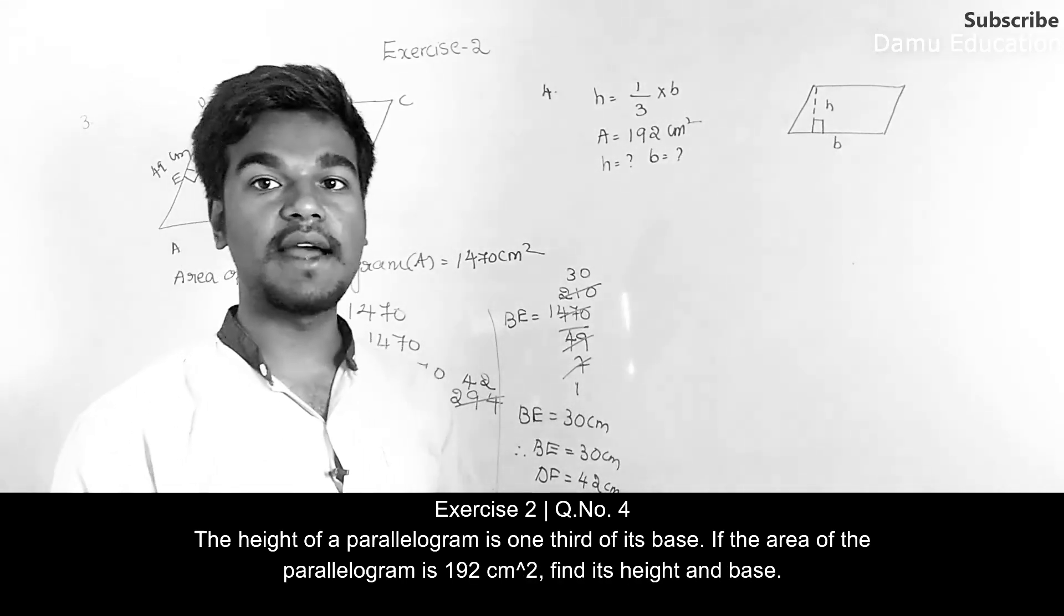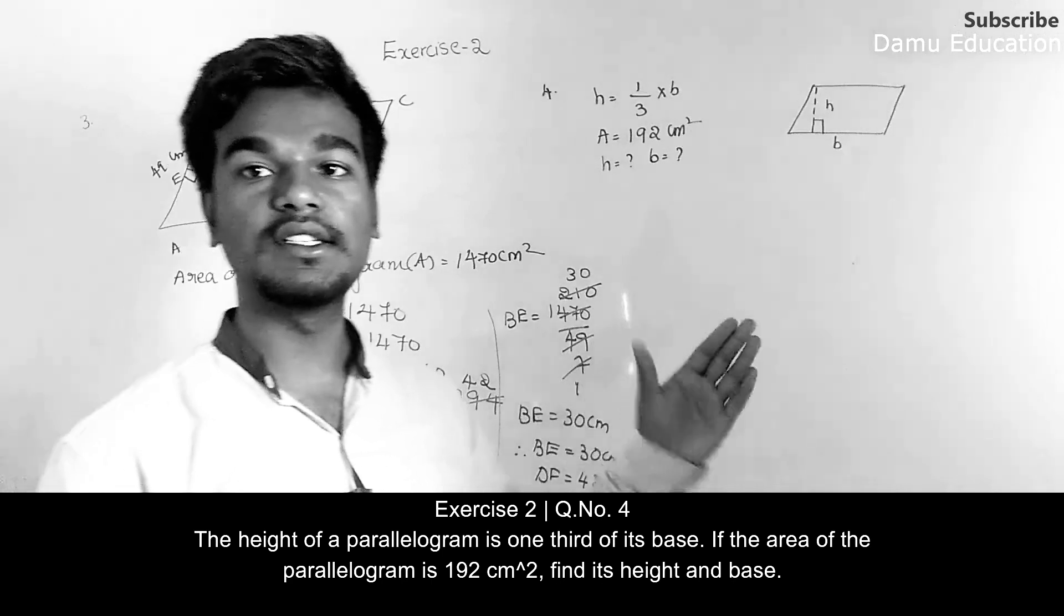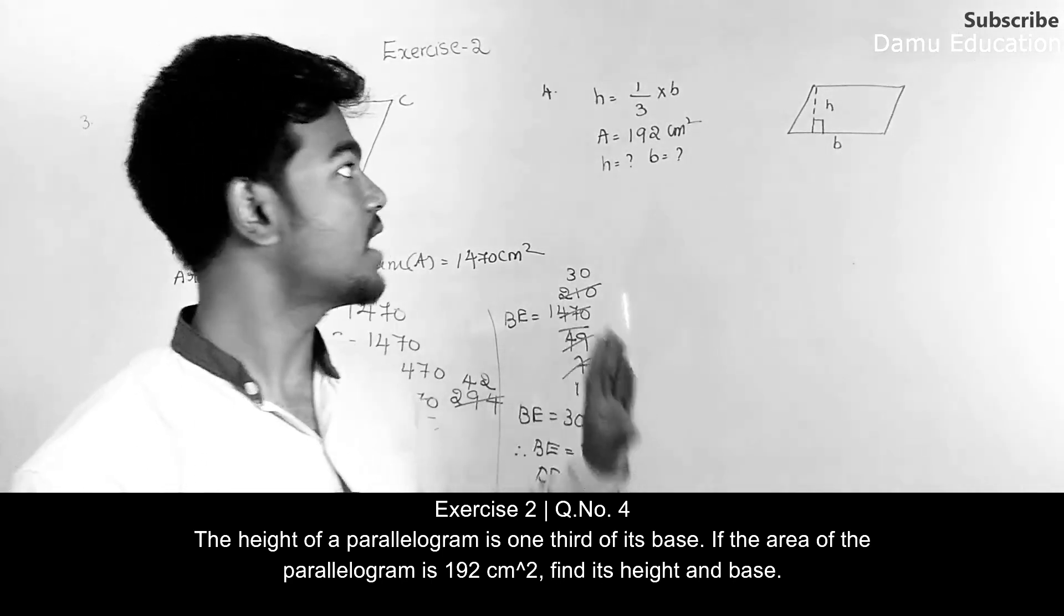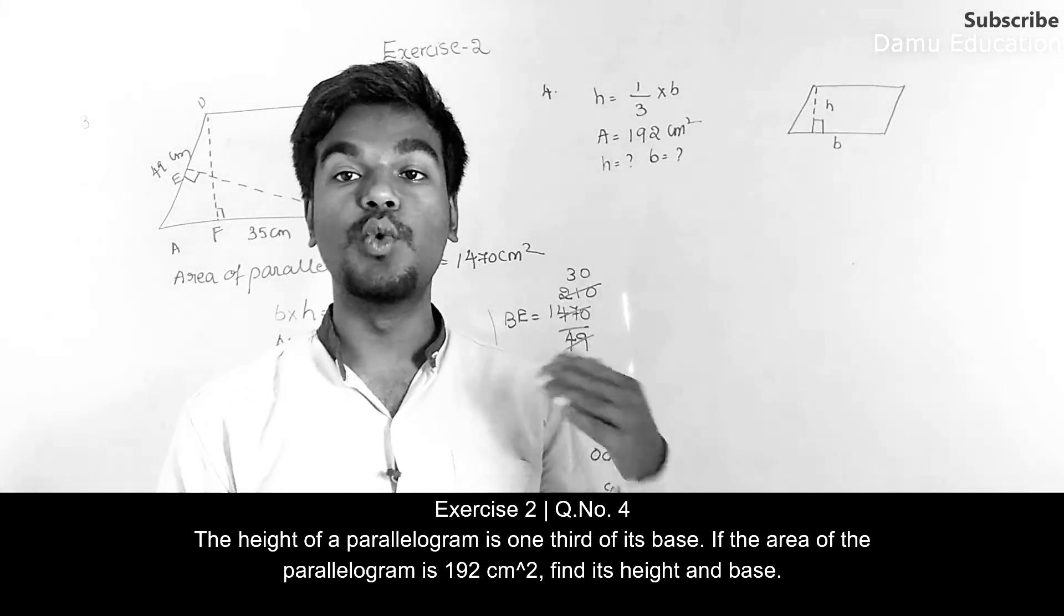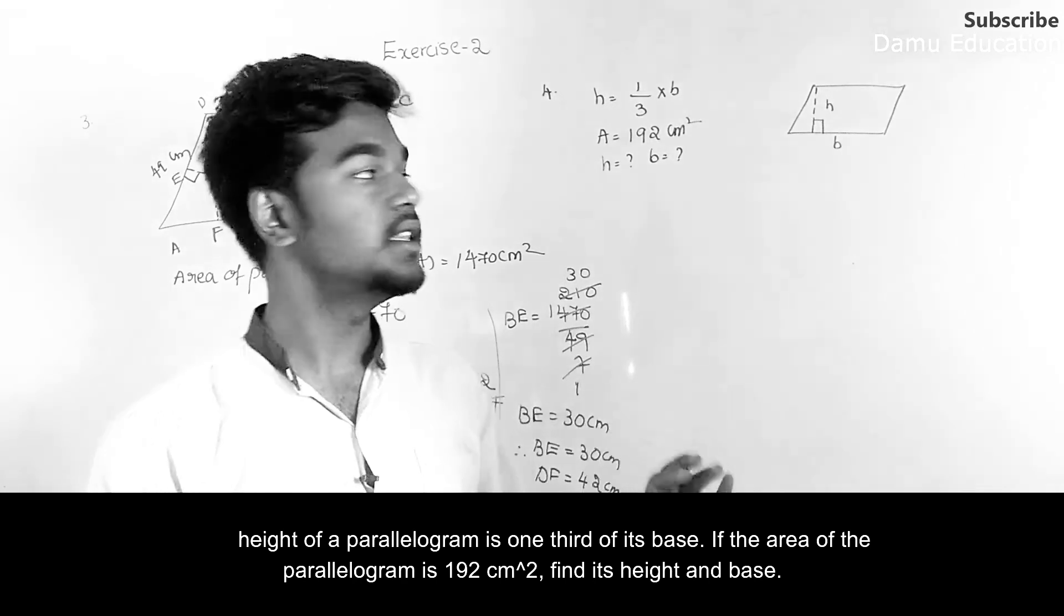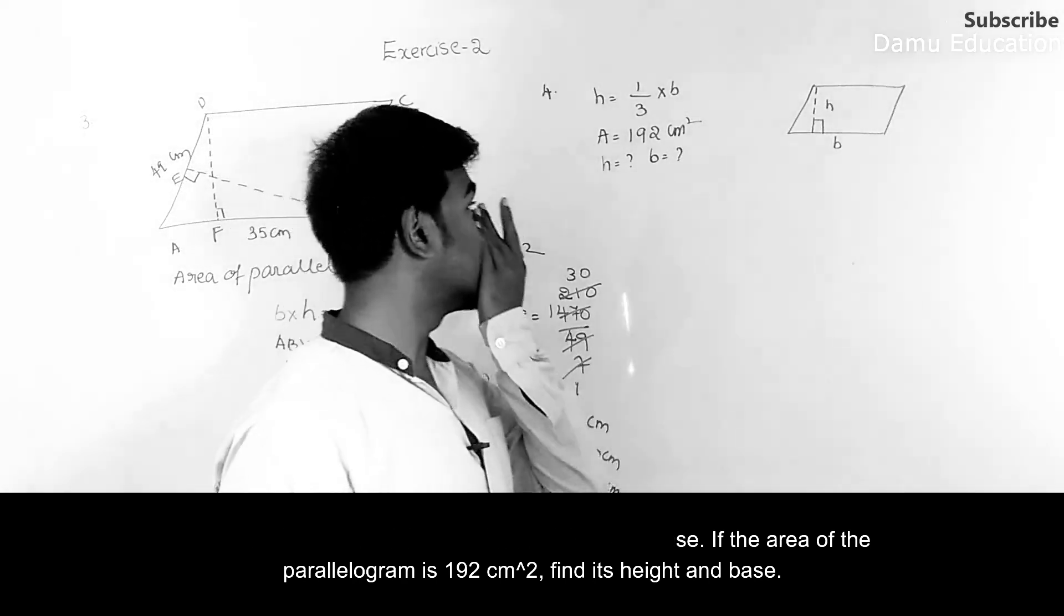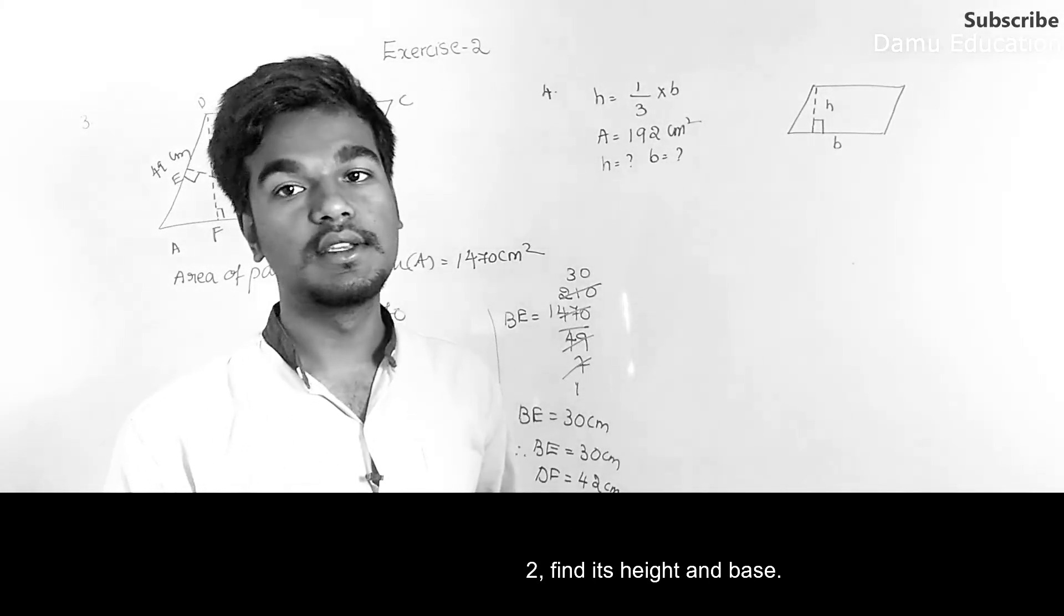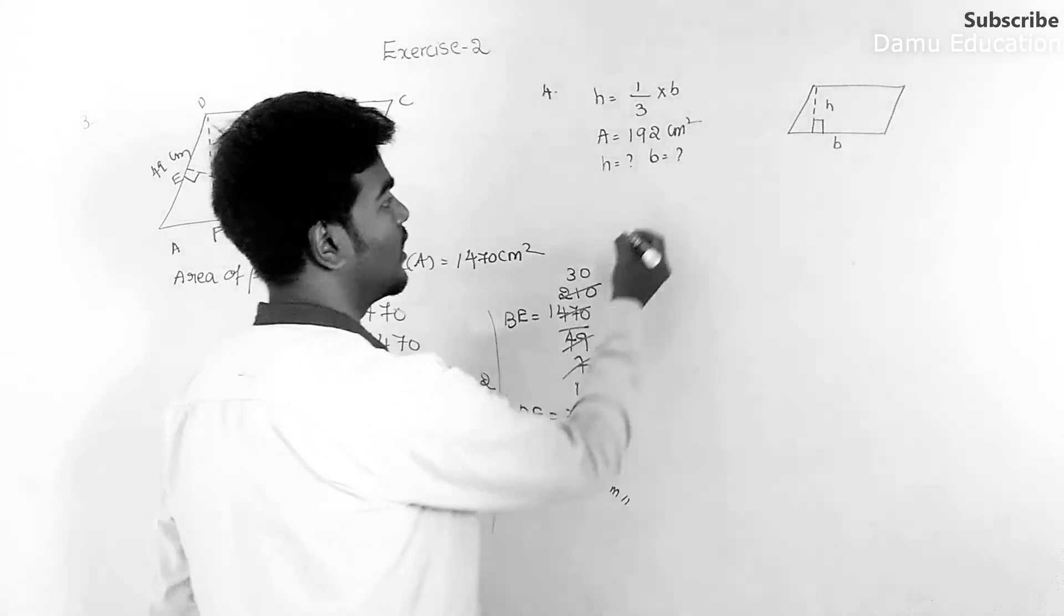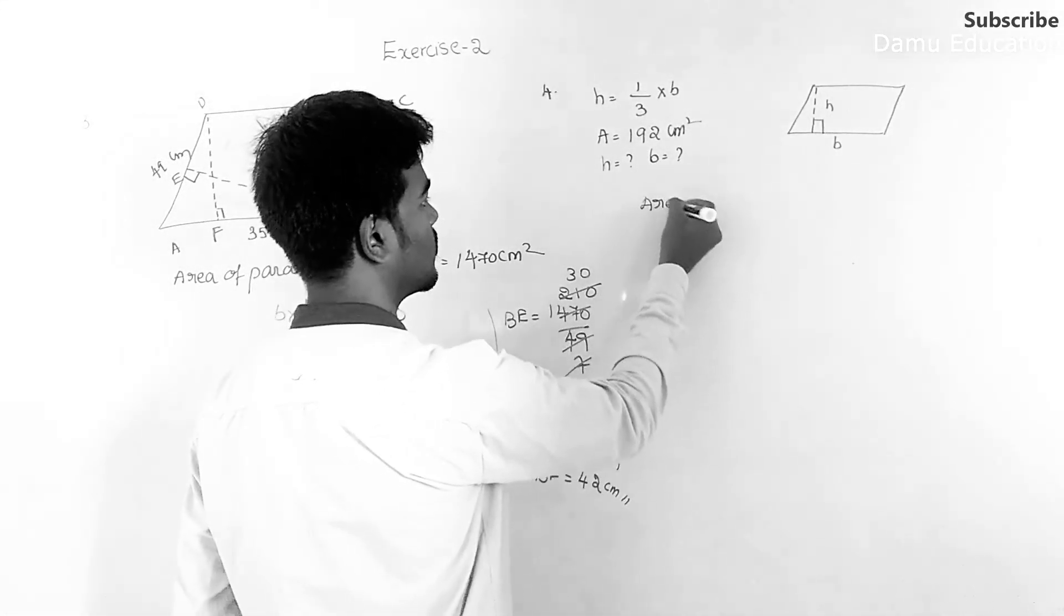Then what is our fourth question? They are given a parallelogram, in that height will be one-third of its base. Again they are given the area of the parallelogram as 192 centimeters squared.